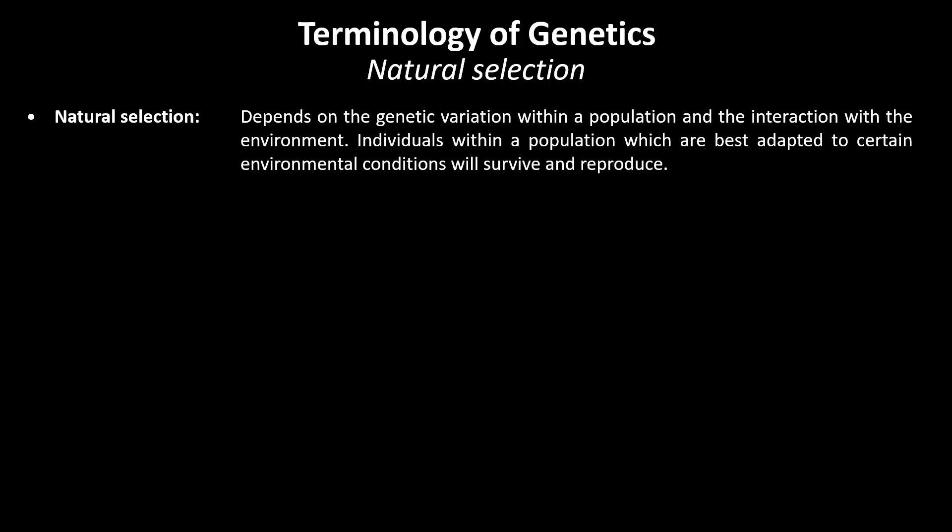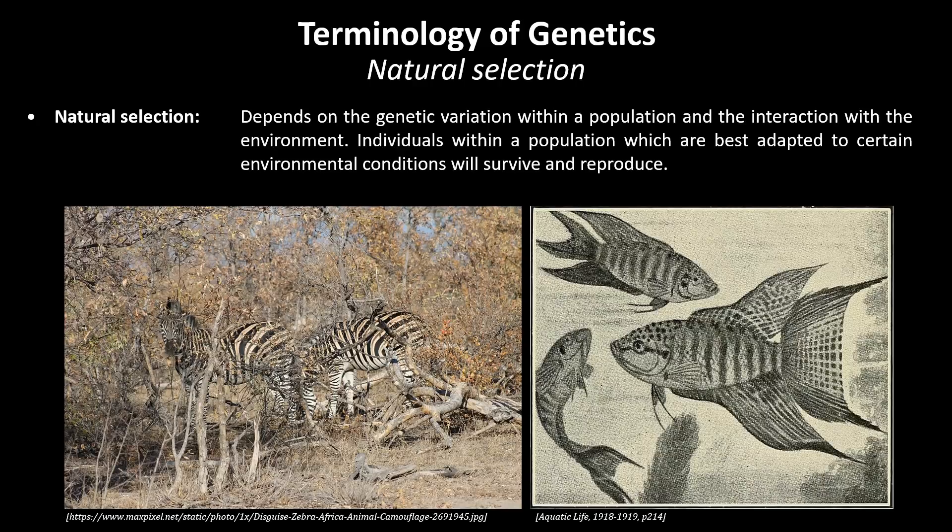Individuals within a population which are best adapted to certain environmental conditions will survive and reproduce. Examples are the camouflage of a zebra to be protected against predators, but also labyrinth fish being adapted to oxygen-poor standing waters.